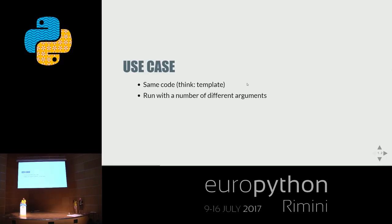Jupyter notebooks — probably a lot of you use them — and sometimes you have a use case where you want to modify a set of arguments and rerun with a slightly different set, and you end up creating a copy, saving a copy of your notebook. When you have the same code base but want to rerun with different arguments, Jupyter notebooks are not created as templates or functions; it is not easy to inject arguments into them. I'll show you a way of doing that.